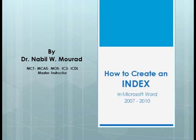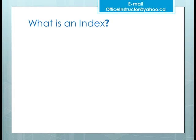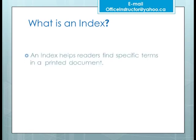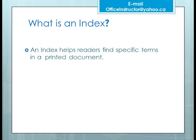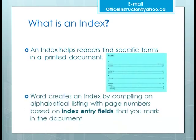An index helps readers find specific words in a printed document. If the document will be distributed electronically, you might not need an index — you can use the Find feature instead. Word creates an index by compiling an alphabetical listing with page numbers based on index entry fields that you mark in the document.